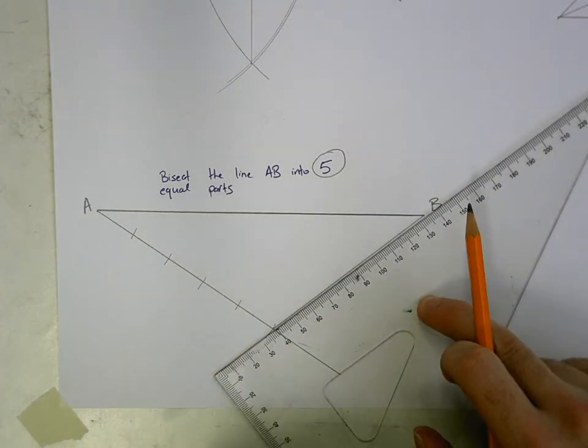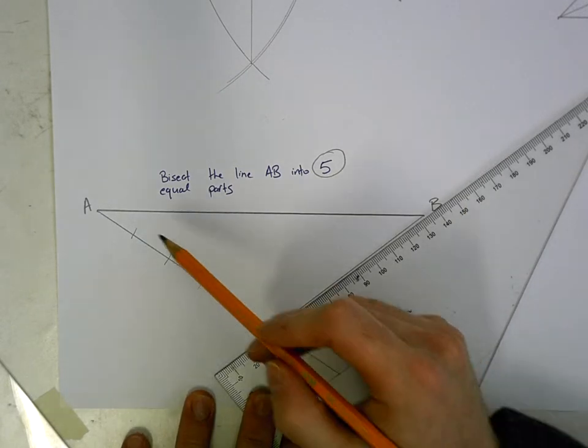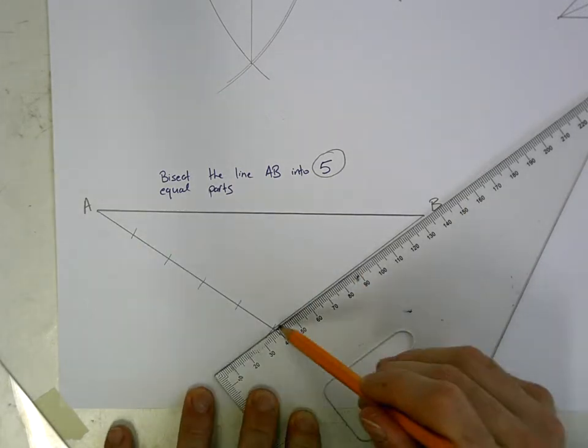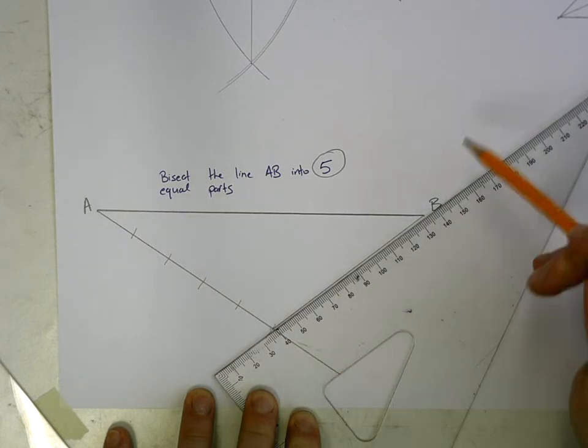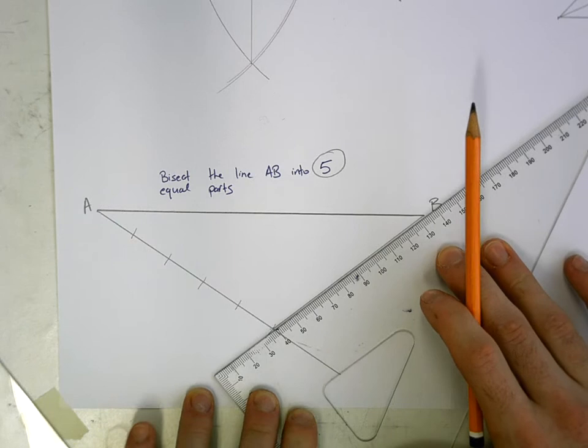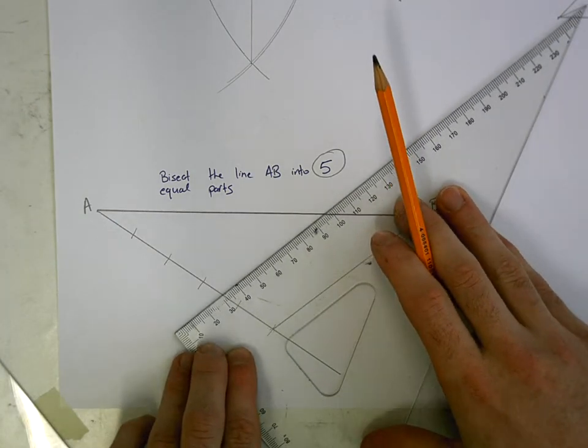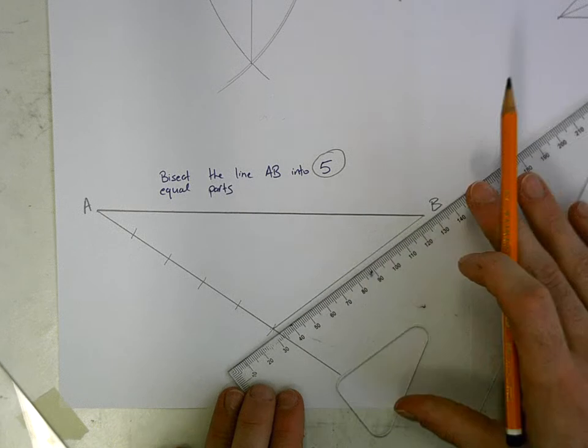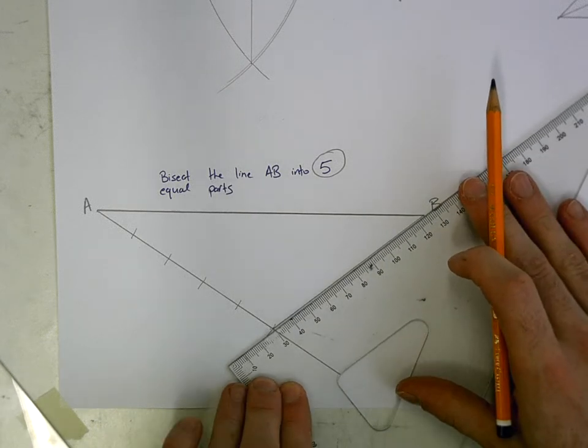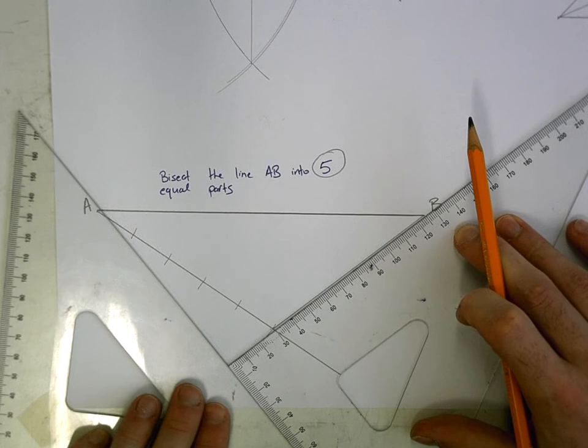What we have to do now is we have to replicate that angle from the other four points that I marked off. So this angle here from the last one to point B has to be replicated from those other four points along my line. To do that, I can't just go guessing it because that's not accurate enough. So what we have to do is we line it up first of all, and then we get our second set square, and we rest it up against the first one.